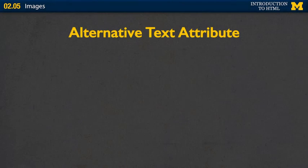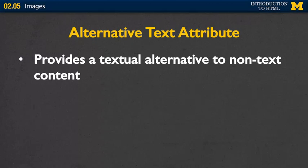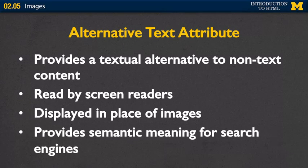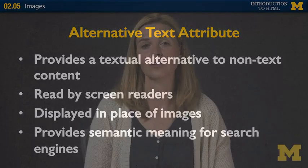Let's talk about alternative text — the attribute you want to add to all of your images. It provides a textual alternative to non-text content, so people who can't see the image can still understand the content behind it. It may be read by screen readers, displayed in place of broken images so users can see a note about what they should be seeing, and it also provides semantic meaning for search engines. Good alt text will help search engines understand what the content of your page is.